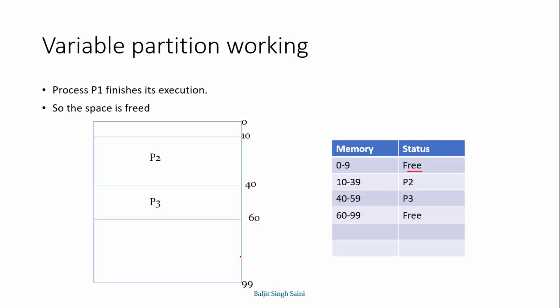If a new process arrives now, I have two blocks to allocate depending upon what is the size of the process. P4 process arrives and requires 25 MB of space. We can allocate from 60 to 99, so 25 MB has been allocated. In this way, we keep on building as processes are added and deleted, and blocks become vacant in the system.